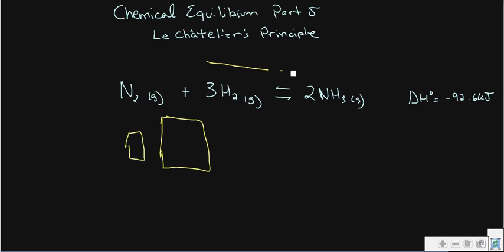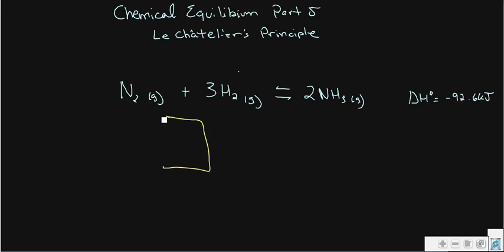If we increase the size of the container, in order to reach equilibrium the reaction would shift toward the side with the greater number of moles. However, if there is no gas involved in the reaction, or if the reactants and products have the same number of moles of gas, then volume changes wouldn't have any effect at all. This only applies to gases with a differing number of moles on each side — if it were two moles versus two moles, changing the volume wouldn't matter.